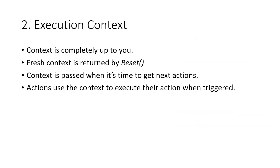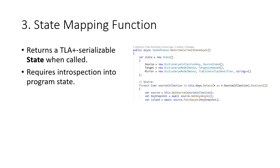For the execution context, I use it mostly to include a series of hooks to allow introspection into my program. Since I used a database, this was very easy - I just have to read the database and summarize it. The context is completely up to you; you get a fresh one whenever you reset, which is equivalent to restarting your program. The context is passed through the system when it's time to get new actions or to execute an action selected by Kayfabe. The state mapping function returns a TLA+ serializable state when called at any step in the program, and this is what requires inspection into the program state.